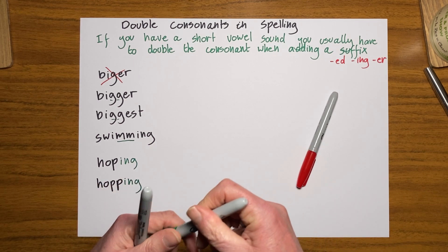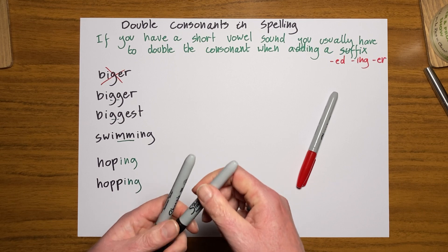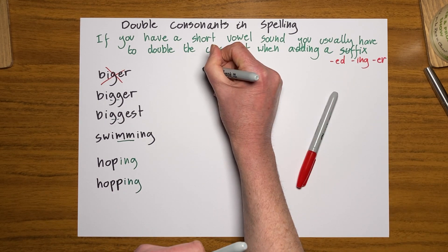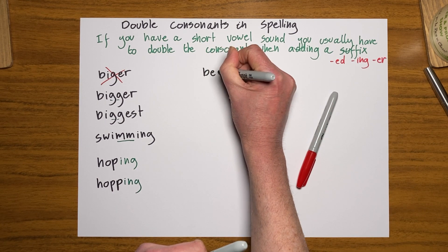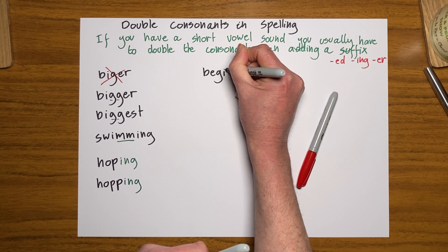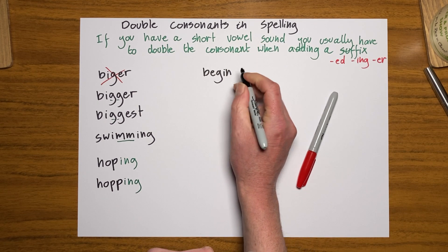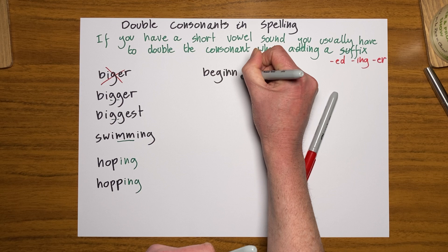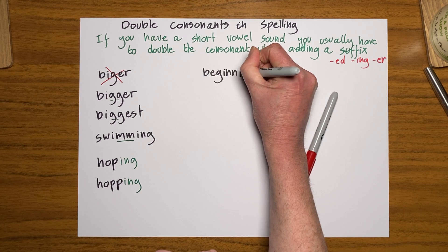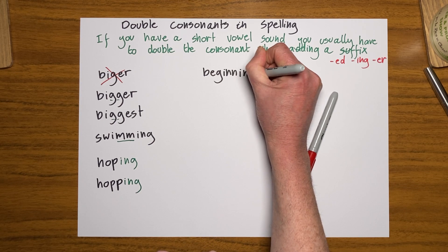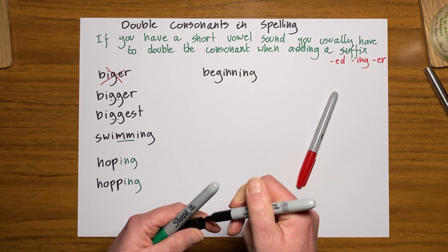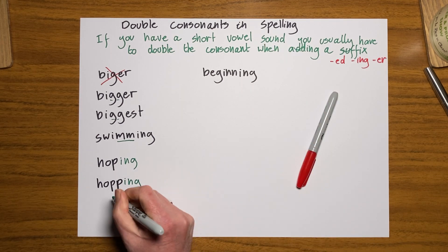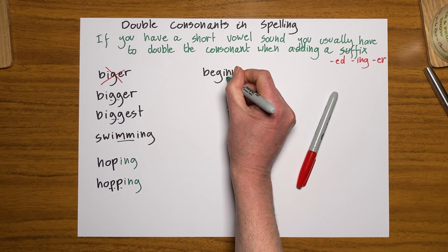Lots of examples of this in the beginning. So begin - it's an I sound. I need to double that consonant and add my ING. And there are those double consonants.